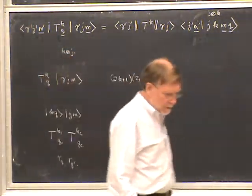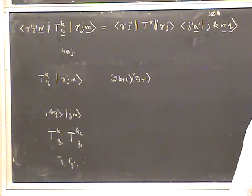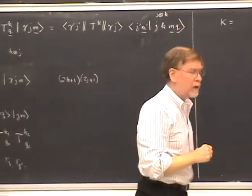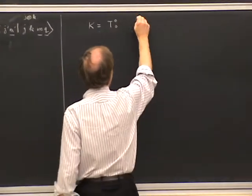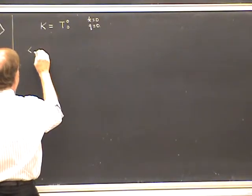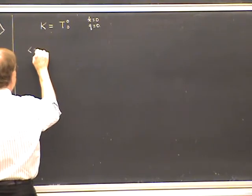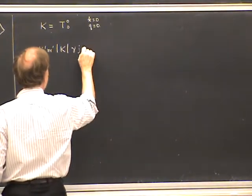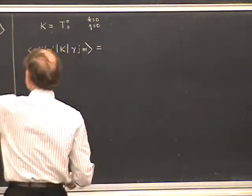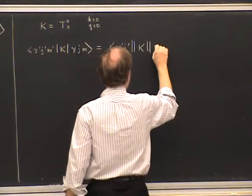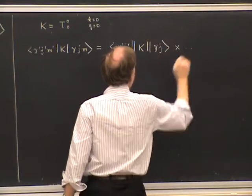That's the review of the Wigner-Eckhart theorem and at least some of the ideas involved in the proof. The next thing I'd like to turn to is a special case: scalar operators. If K is a scalar operator, we know it commutes with all rotations, but it's also an irreducible tensor operator with K equals zero and Q equals zero. There's only one value of Q. Considering the matrix elements of the scalar operator in a standard angular momentum basis, the Wigner-Eckhart theorem tells us there's a reduced matrix element gamma-prime J-prime double-bar K double-bar gamma-J times a Clebsch-Gordon coefficient.